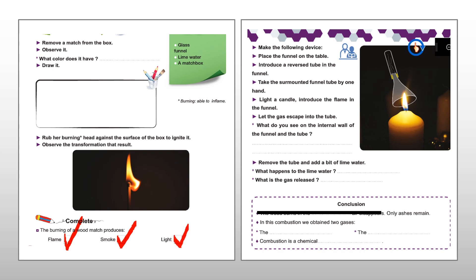On page 141, make the following device. Place the funnel on the table. Introduce a reverse tube in the funnel. Take the surmounted funnel tube by one hand. Light a candle. Introduce the flame in the funnel. Let the gas escape into the tube. The question is, what do you see on the internal wall of the funnel and the tube?